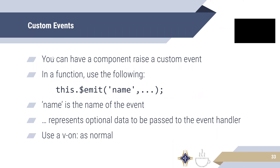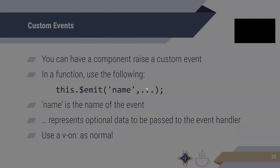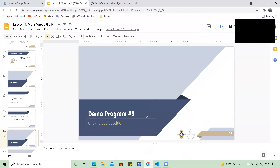And lastly, custom events. Custom events are used for sending information from a child component to a parent component. The format is 'this.$emit', followed by the name of the event and whatever value you want to send — which can be a variable, an array, or whatever you prefer. Let's take a look at how this plays out in demo program three.